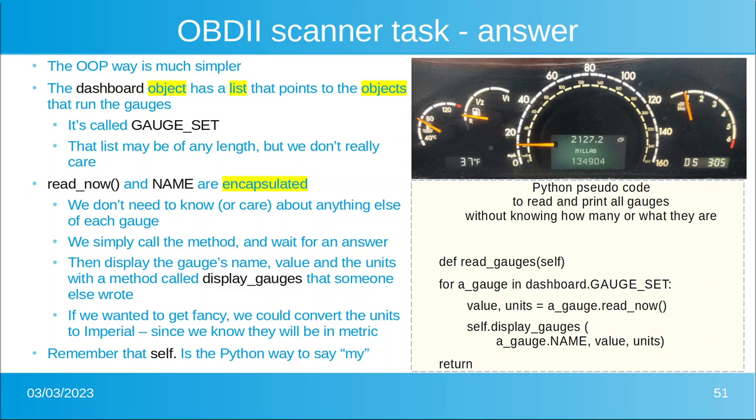You could do this with just five lines of code — much, much easier than a procedural method.